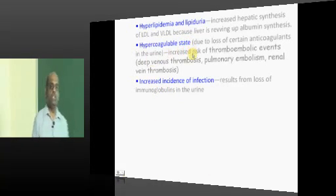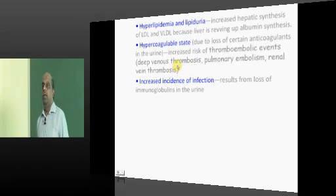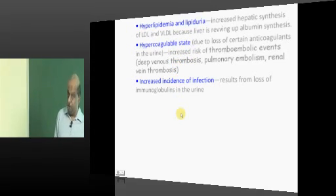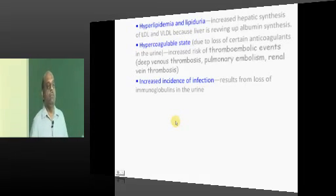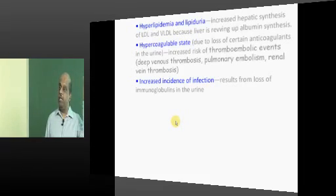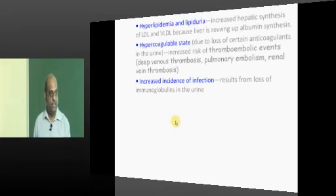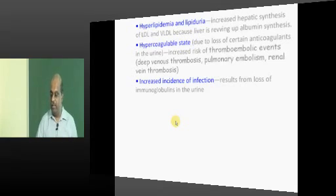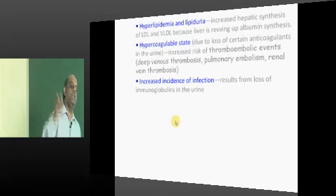They have a hypercoagulable state. Why? Protein C and protein S are natural antithrombotic proteins in our blood - God-gifted antithrombotic features. They belong to the opposition party. Who is the ruling party? Factor 2, factor 5, factor 7 - all clotting factors are one party. Protein C and protein S are the other party. In the proteinuric phase, people lose even their protein C and protein S. If antithrombotic factors are lost into urine, it will predispose to a prothrombotic state.